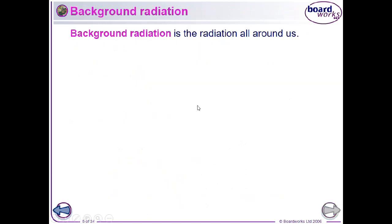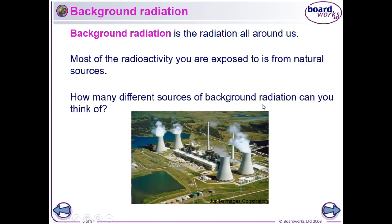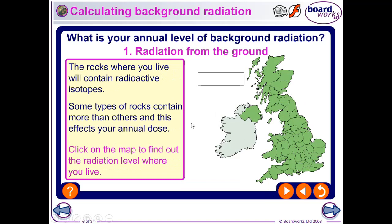We are all going to receive a certain dose of radiation during our lives. This comes from background radiation all around us — natural sources such as cosmic rays from outer space. How much background radiation are we exposed to during a year? First, we get radiation from rocks, such as uranium in rock samples.